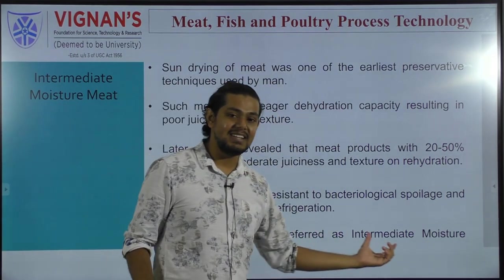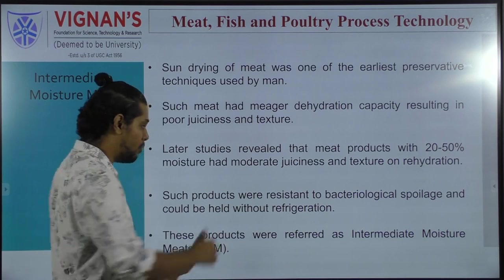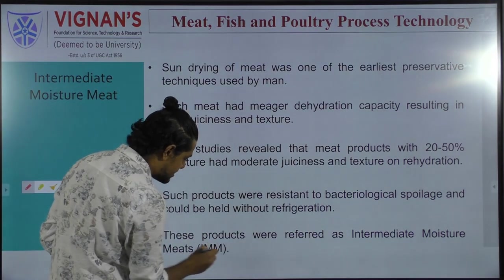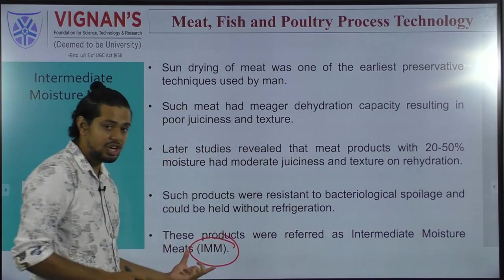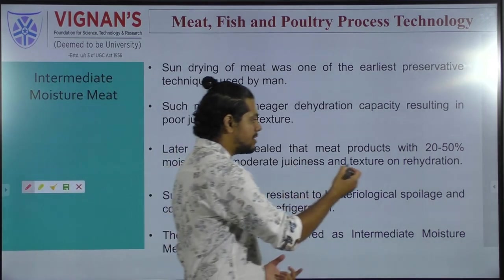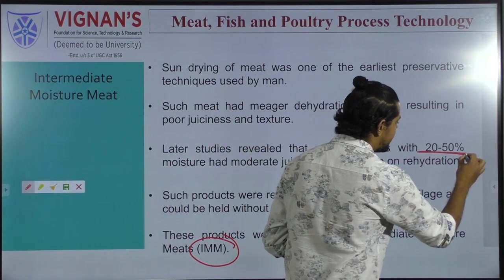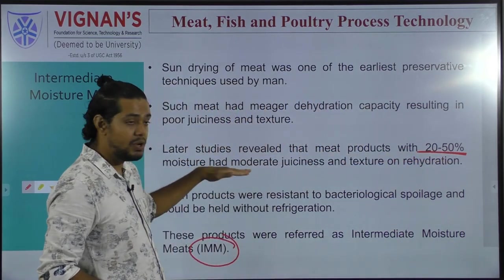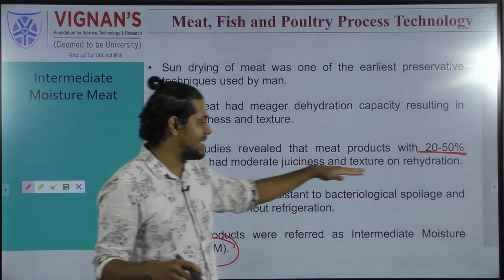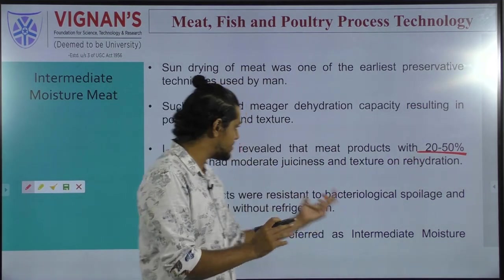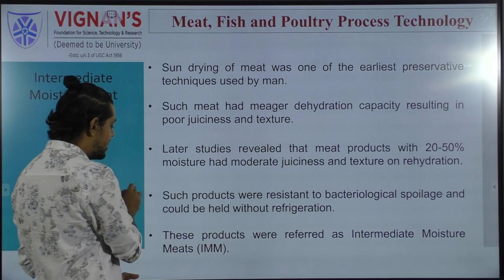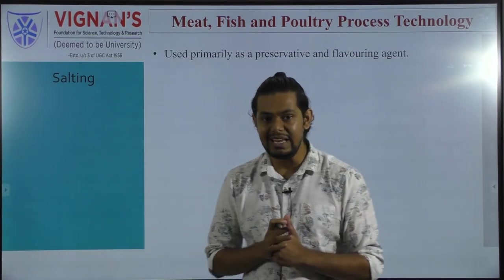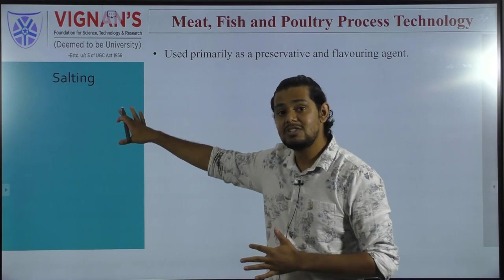These products are referred to as intermediate moisture meat, or IMM. IMM is the meat product where moisture content is maintained anywhere between 20 to 50 percent. It imparts moderate juiciness as well as texture upon rehydration.